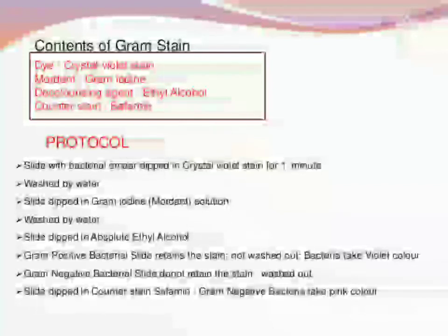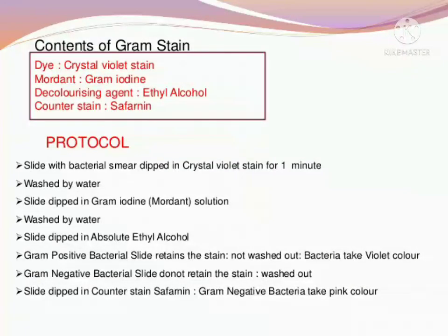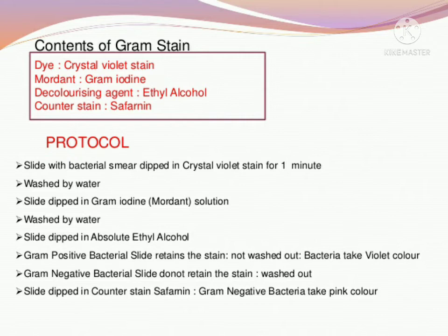We use crystal violet colour dye on the bacteria. Then we wash it. When we observe under the microscope, all cells are pink and blue in colour. Then we wash with ethanol, acetone, or water. Some bacteria remain pink in colour — we call them gram positive bacteria. The other bacteria which lose the colour — those become colorless.